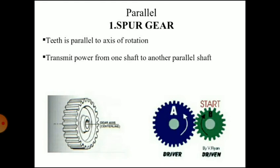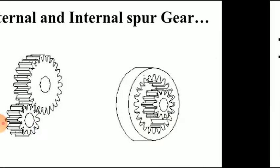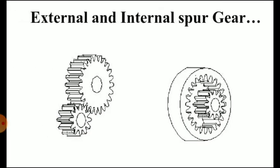The first type is spur gears. These gears have their teeth parallel to the center line of the gear and are used for transmitting power between parallel shafts. You can see in the diagram the external and internal spur gears.